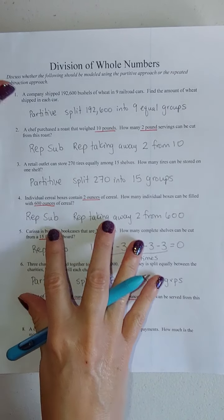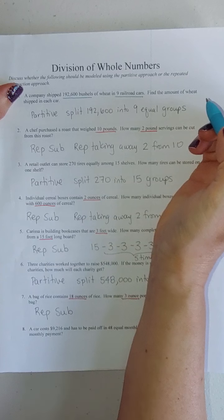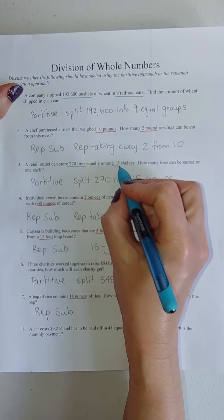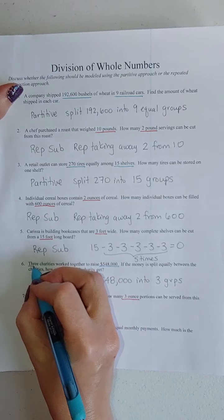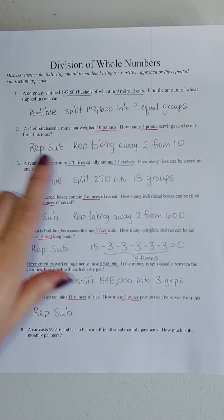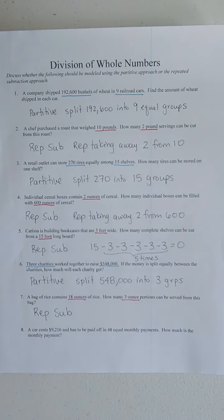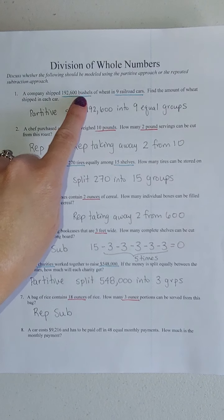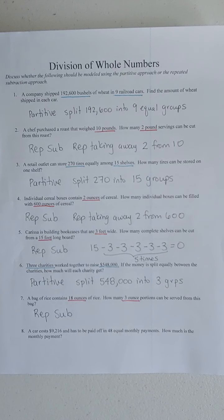Now let's go back and look at the partitive ones in blue. We had 192,600 bushels and nine railroad cars. 270 tires, 15 shelves. $548,000 and three charities. What do you notice? With the repeated subtraction, the units are the same. Pounds, pounds. Ounces, ounces. Feet, feet. But with the partitive, the units are different. Bushels, railroad cars. Tires, shelves. Dollars and charities. So it's worth noting that as a kind of a little quick way of figuring it out.